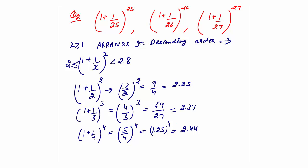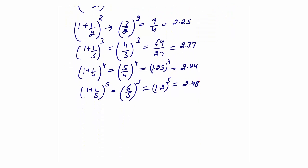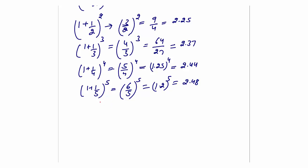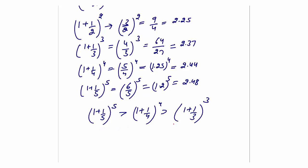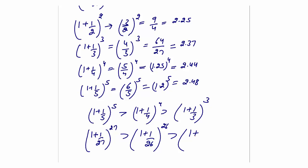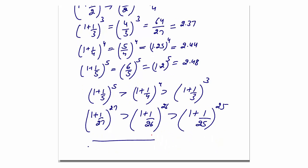Continuing: (1+1/5)^5 = (6/5)^5 ≈ 2.48. The pattern is clear — the larger the number, the greater the value. So (1+1/27)^27 > (1+1/26)^26 > (1+1/25)^25. This is the descending order.